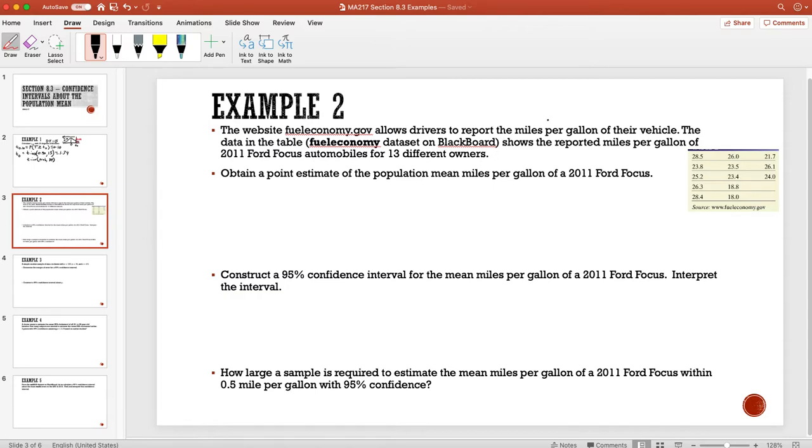We want a point estimate of the population mean miles per gallon of a 2011 Ford Focus. This would just be X-bar and we could find that in Excel by doing average of these values, A1 to A13.